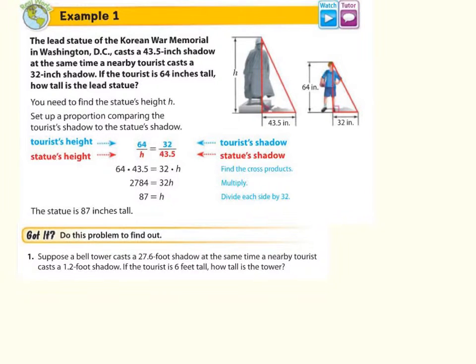For example one, this is not in your notes, this is just for you to refer to to see how they actually create a triangle out of real world objects. The lead statue of the Korean War Memorial in Washington DC casts a 43.5 inch shadow at the same time a nearby tourist casts a 32 inch shadow. If the tourist is 64 inches tall, how tall is the lead statue? We can make the measurements of the tourist because he's a human being, and we can use those measurements to determine the actual measurements of the statue because the shadows are something that we can measure since they are on the ground.